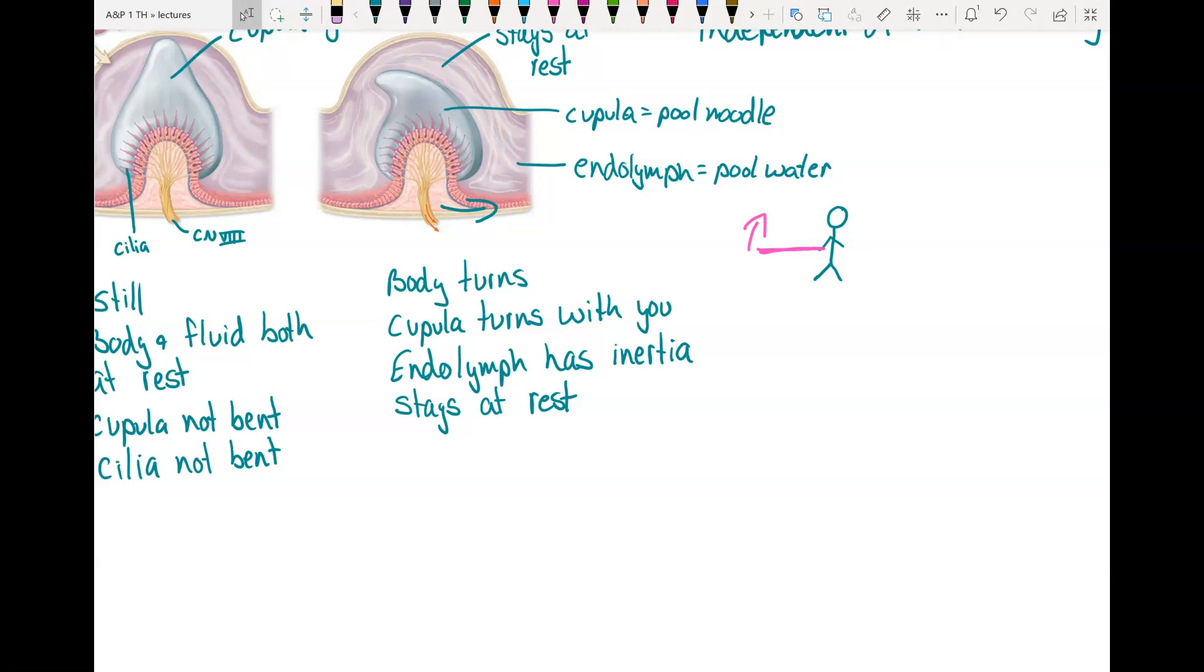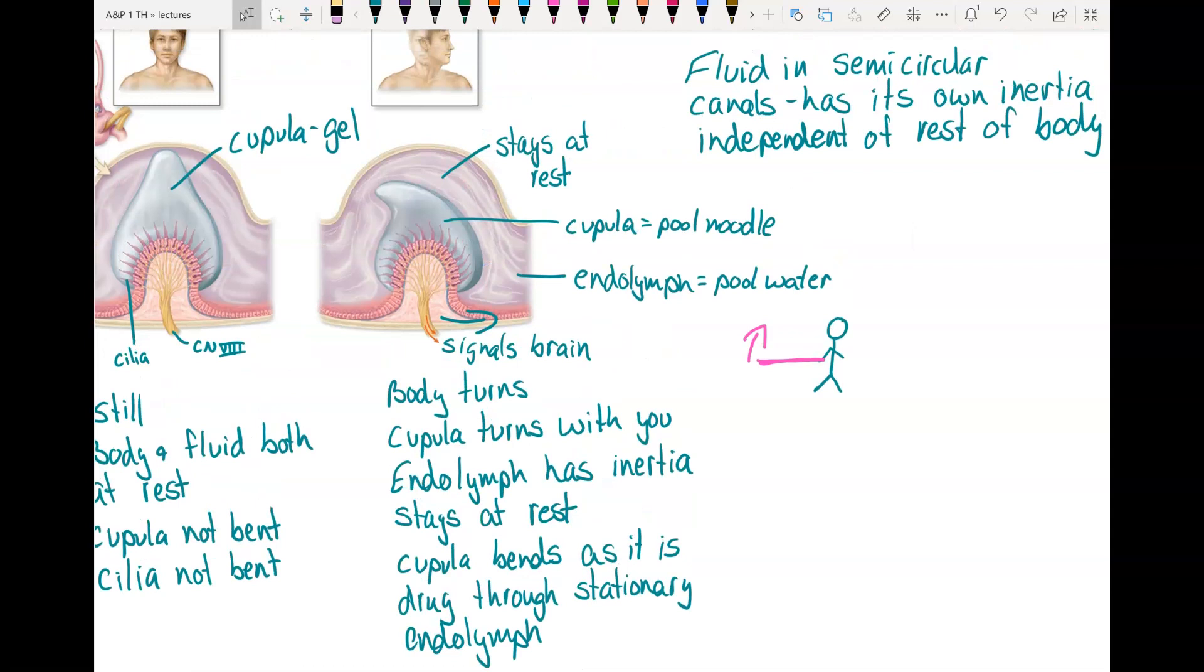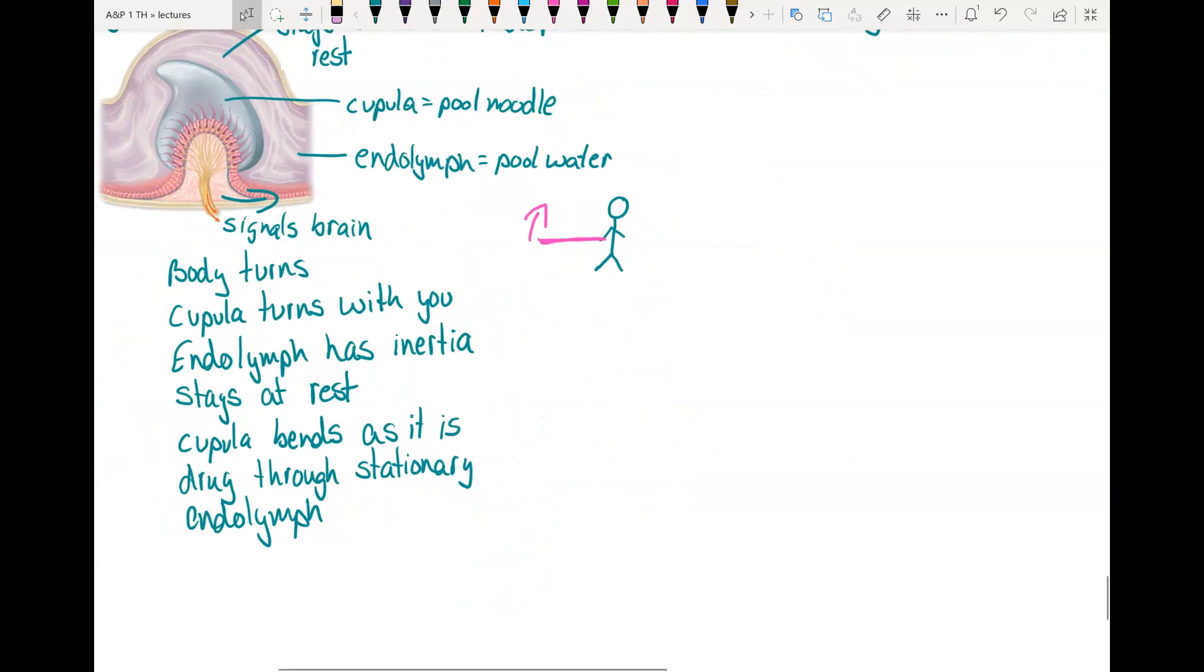That's what happens here. When you turn your head, the cupula turns with you, the endolymph has inertia, it stays still, so the cupula bends as it is dragged through the stationary fluid. And then when that happens, it signals the brain. You sense yourself turning because the fluid stays, but your body spins and that cupula spins with you and gets dragged through the stationary fluid.